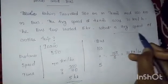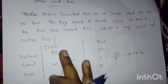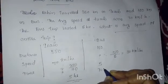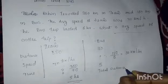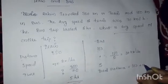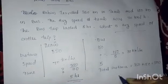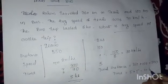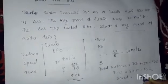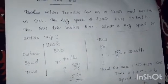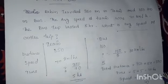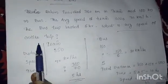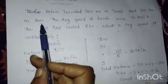Now we want to find the average speed of the entire trip. The total distance is 350 plus 150, which equals 500 km. The total time taken is 5 plus 5, which is 10 hours. So we can find the average speed by dividing 500 by 10, giving us 50 km per hour. This is the average speed of the entire trip traveled by train and bus.